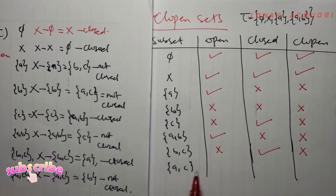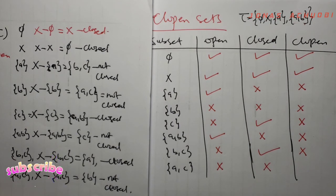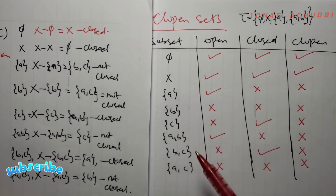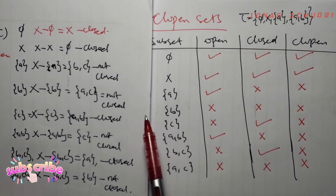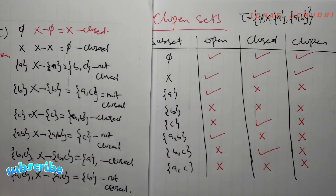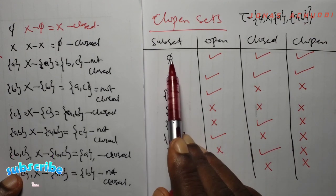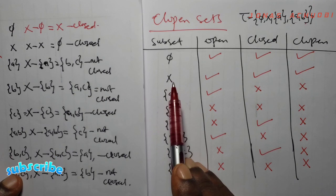The last subset is AC. Is AC open? There is no AC in tau, so AC is not open. Is AC closed? AC is not closed. Since AC is neither open nor closed, AC is not clopen. So of all the eight subsets of the set X with elements A, B, C, only two sets are clopen — because only two sets are both open and closed — and they are nothing but the empty set and the set X itself. As a final remark, in every topological space, the empty set and the entire set are always clopen.